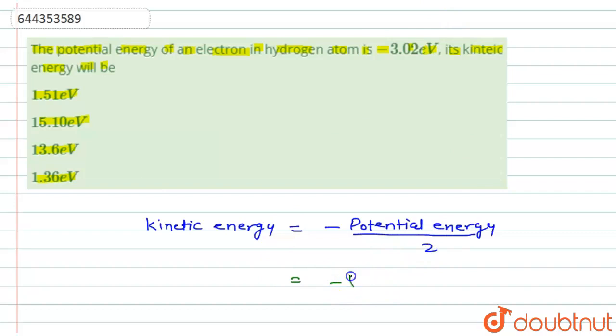That equals minus 3.02 electron volt upon 2, then the value will be 1.51 electron volt.